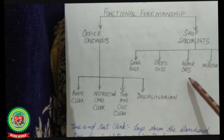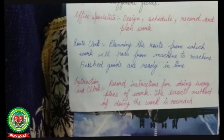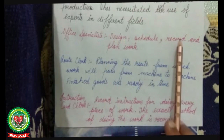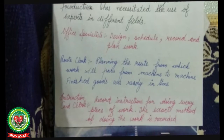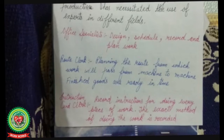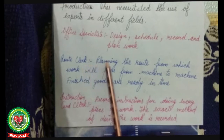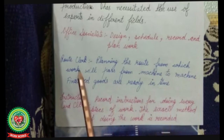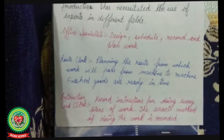Under office specialists we have: root clerk, instruction card clerk, time and cost clerk, and disciplinarian. Under shop specialists we have: gang boss, speed boss, repair boss, and inspector. Office specialists are experts who design, schedule, record, and plan work. The first type is the root clerk, who plans the route through which work will pass from machine to machine until finished goods are ready — setting the path of passage of stock from machine 1 to machine 2 and so on.